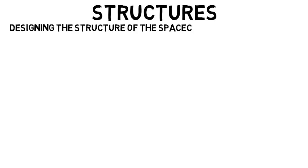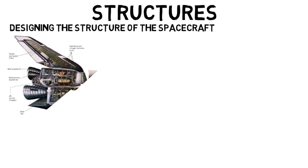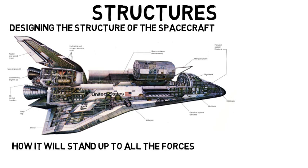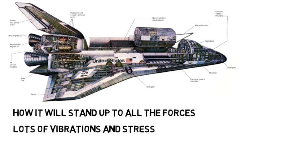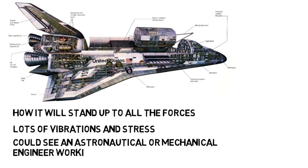Structure is about designing the structure of the spacecraft — how it is shaped and how it will stand up to all the forces it's subject to. Just when a rocket is launching, there are lots of vibrations and heavy stress that occur throughout the vehicle, so it's important that everything is designed properly to withstand that. This is also a subsystem that you could see an astronautical or mechanical engineer working on.